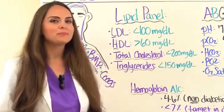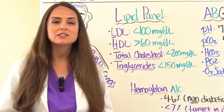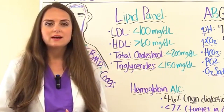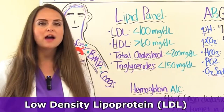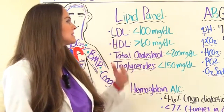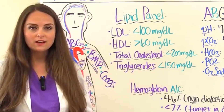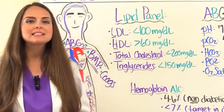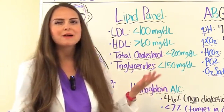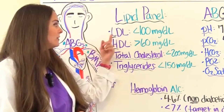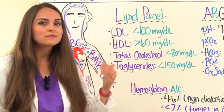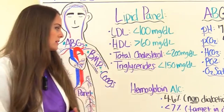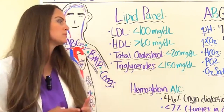Now let's look at the lipid panel, which tells us about the patient's risk for cardiovascular disease, looking at LDL, HDL, total cholesterol, and triglycerides. LDL (low-density lipoprotein) we want low — less than 100 mg/dL. HDL (high-density lipoprotein) we want high — greater than 60 mg/dL. A memory tip: L in LDL means we want it low; H in HDL means we want it high. Total cholesterol should be less than 200 mg/dL, and triglycerides less than 150 mg/dL.